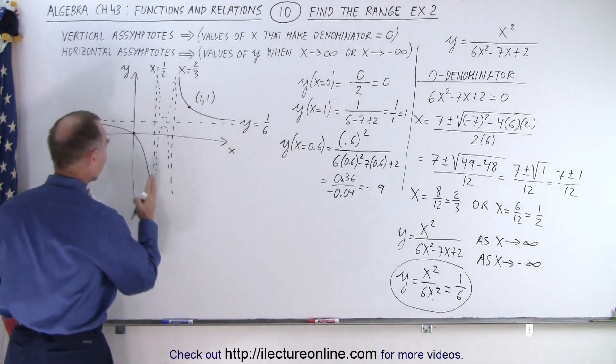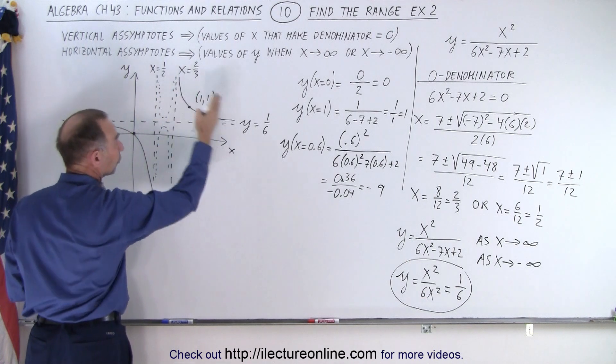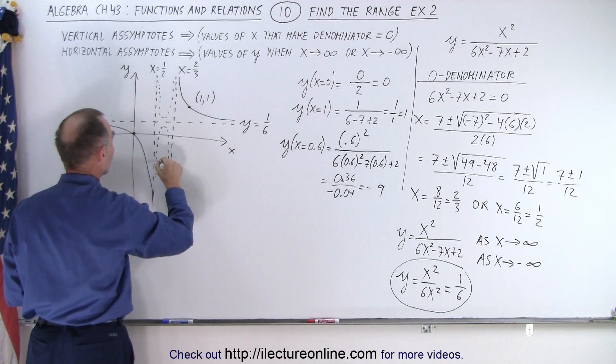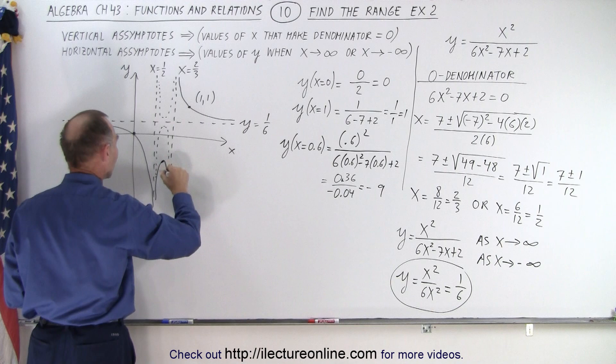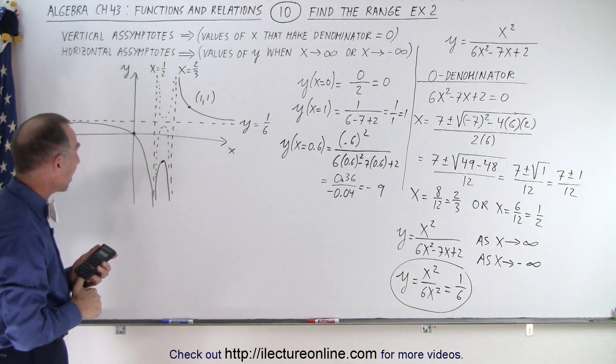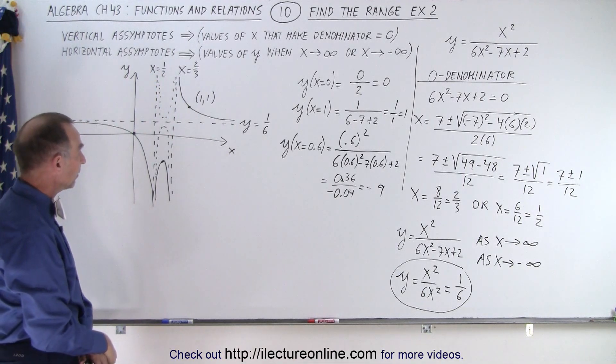Take that to the numerator and times 0.36. That gives us minus 9. So, meaning that if we pick a point for x between 1 half and 2 thirds, the y value is minus 9, which is down here somewhere. So that means we need to have something that looks like this to conclude the whole graph. And we can't have anything up there because that would give us a positive value.